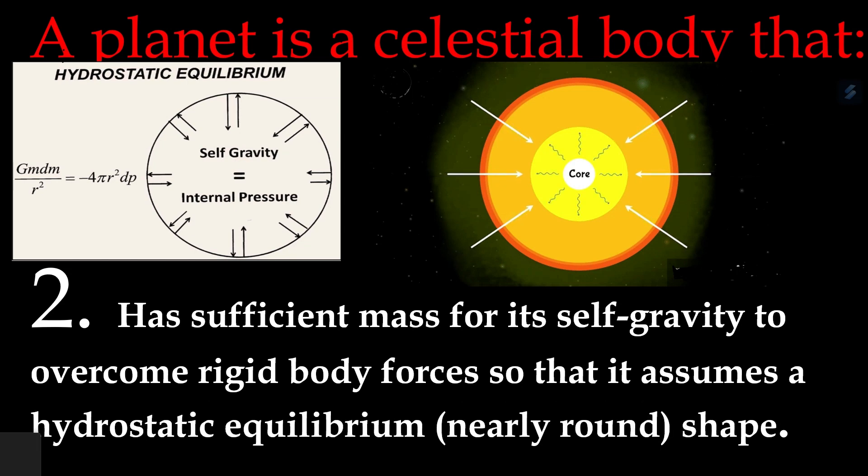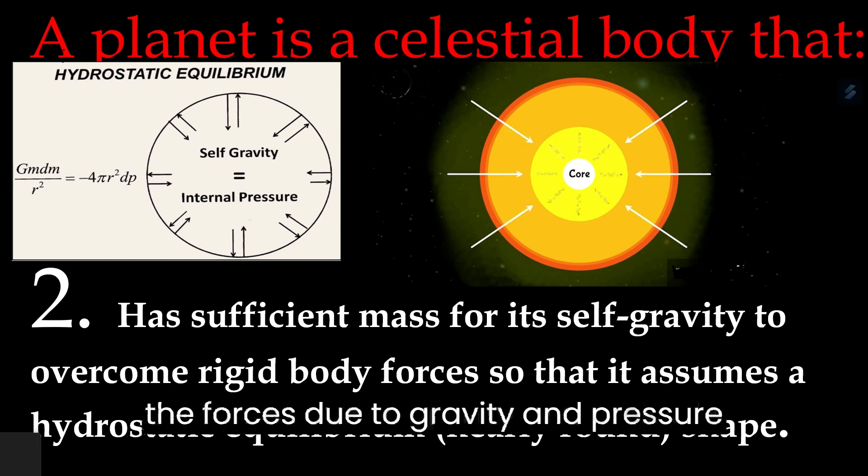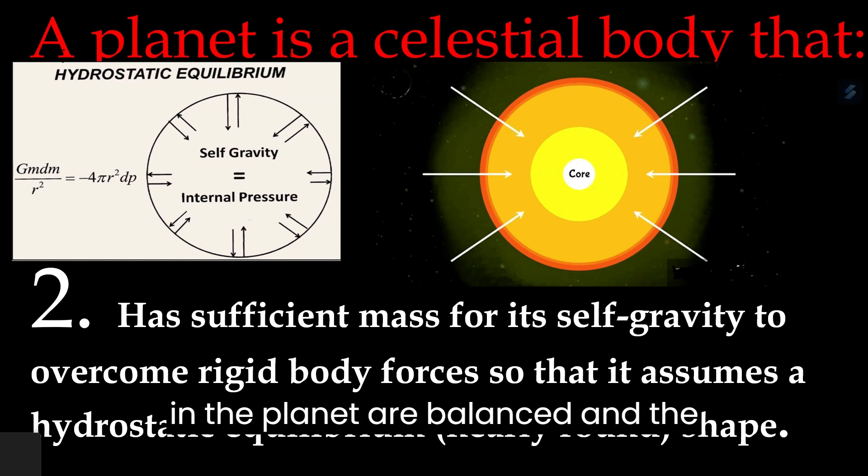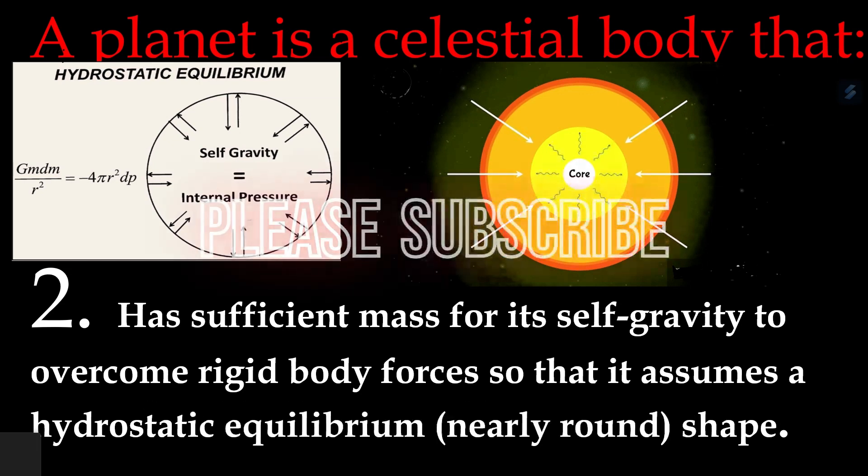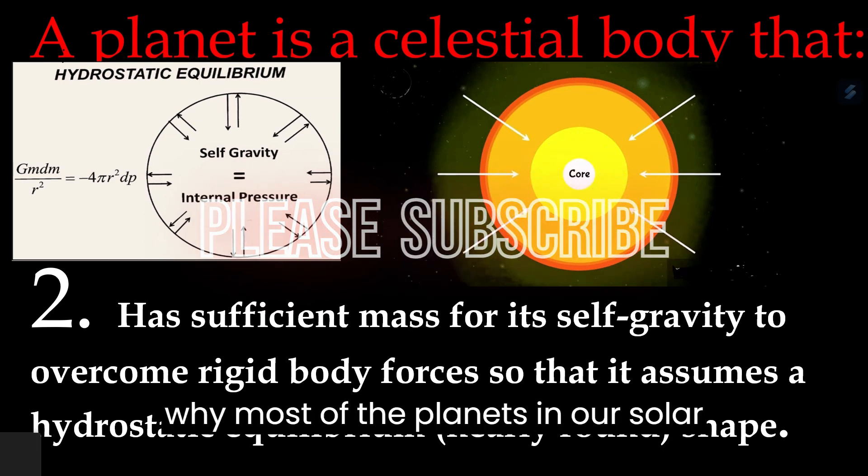In the case of planets, hydrostatic equilibrium is the condition in which the forces due to gravity and pressure in the planet are balanced and the planet is in a stable state. This is why most of the planets in our solar system are spherical.